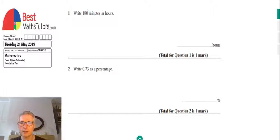Question one is write 180 minutes in hours. So what we need to know for that is that in one hour we've got 60 minutes. So if we were to divide 180 divided by 60, that will give us the number of hours. 180 divided by 60, we get 3 because 3 times 60 is 180. So that gives us 3 hours. That's our answer for the first one.